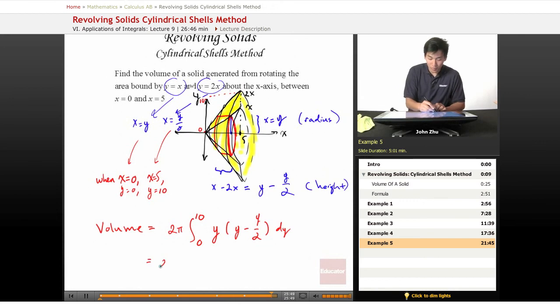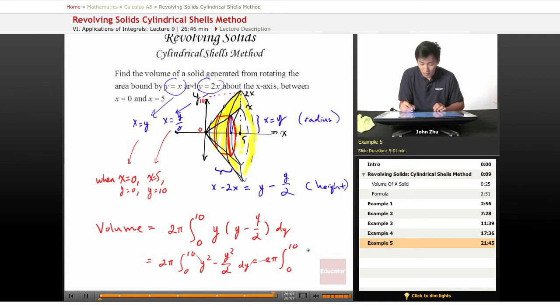So we can rewrite that a little bit, 0, 10, y squared minus y squared over 2 dy. In other words, 2 pi times integral from 0 to 10, y squared minus 1 half y squared. So that means it's just 1 half y squared dy.